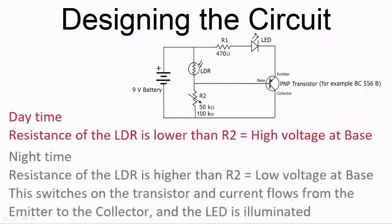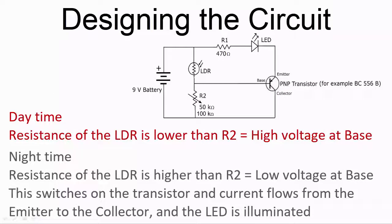Daytime operation. When it's light, during the day, the resistance of the LDR is low, much lower than R2. This means that the voltage being applied to the base of the transistor is high, close to 9 volts.